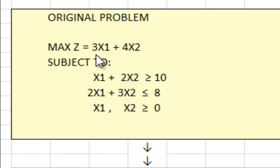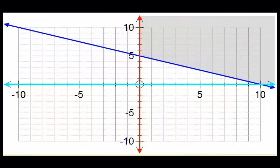In this problem I have a maximization, a simple maximization problem with two main constraints and non-negativity constraints. If we plot this problem for the first constraint which is x1 plus 2x2 greater than or equal 10, and x1 and x2 greater than or equal 0.